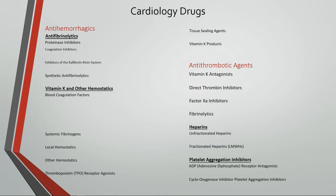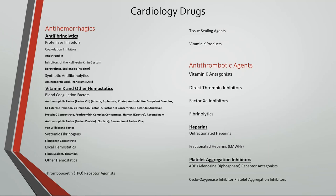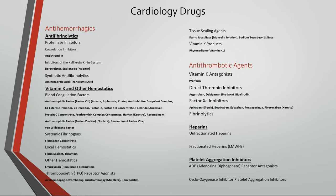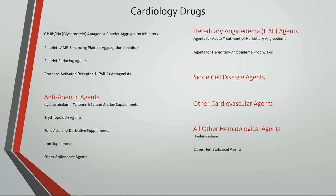Under anti-hemorrhagics, we have antifibrinolytics including proteinase inhibitors consisting of coagulation inhibitors and inhibitors of the kallikrein-kinin system, as well as synthetic antifibrinolytics. Vitamin K and other hemostatics include blood coagulation factors, systemic fibrinogens, local hemostatics, thrombopoietin receptor agonists, tissue sealing agents, and vitamin K products. Under antithrombotic agents, we have vitamin K antagonists, direct thrombin inhibitors, factor Xa inhibitors, fibrinolytics, heparins including unfractionated and fractionated heparins, and platelet aggregation inhibitors.